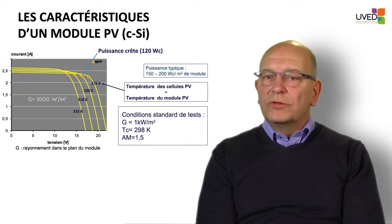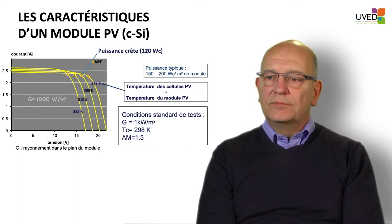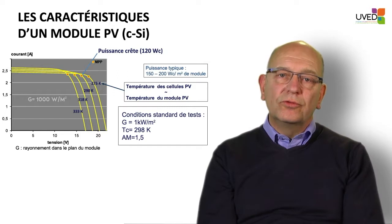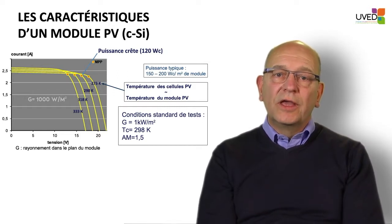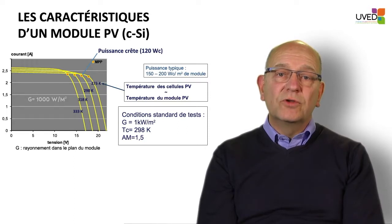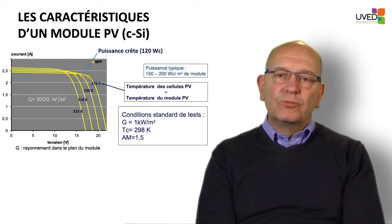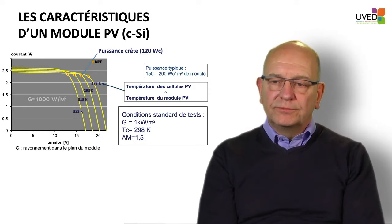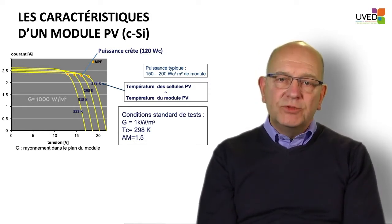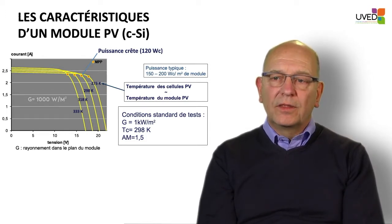Considering that photovoltaic module power is variable, it is necessary to define reference conditions in which a rated power may be considered. These reference conditions are called standard test conditions, with a sunshine of one kilowatt per square meter, a module temperature of 25 degrees, and an air mass coefficient equal to 1.5. The air mass coefficient relates to the optical travel in the atmosphere with a solar height angle of 40 degrees. This is what we call the peak power, and it corresponds to the installed power.